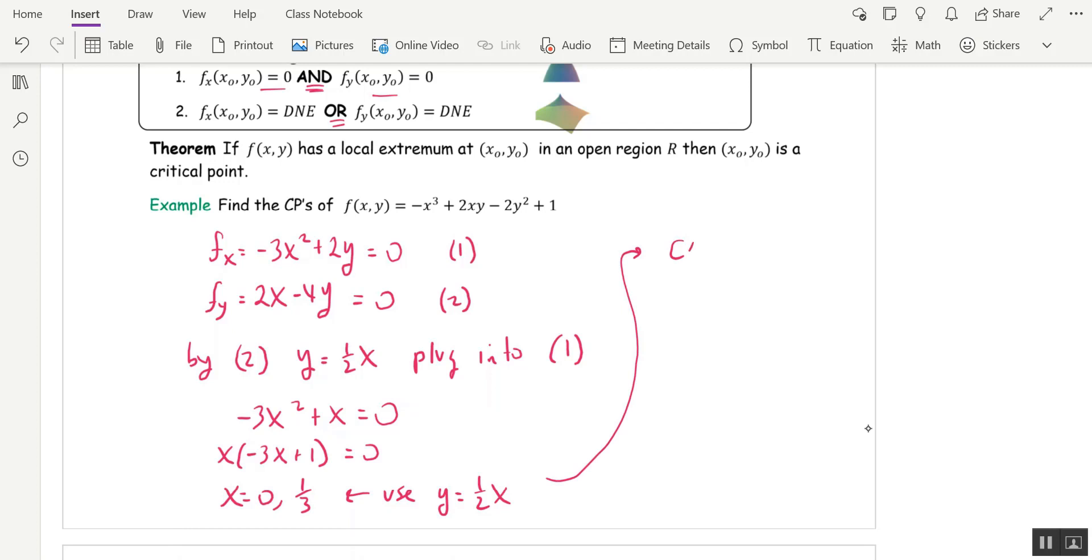So factor out an x, negative 3x plus 1 is 0. So we see x is either 0 or 1 third. Now we can use the fact that y equals 1 half x to get the y coordinates of those critical points. So our critical points are when x is 0, y is 0. And when x is a third, y is 1 half that, which would be 1 sixth.